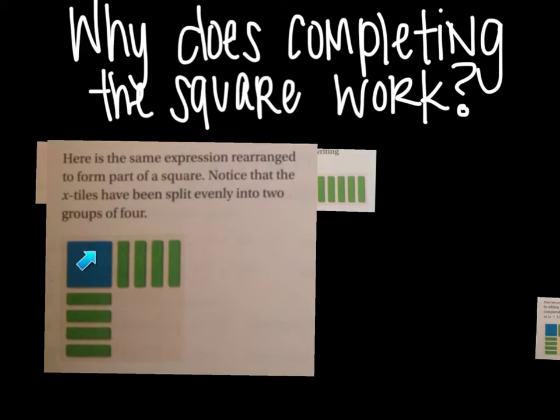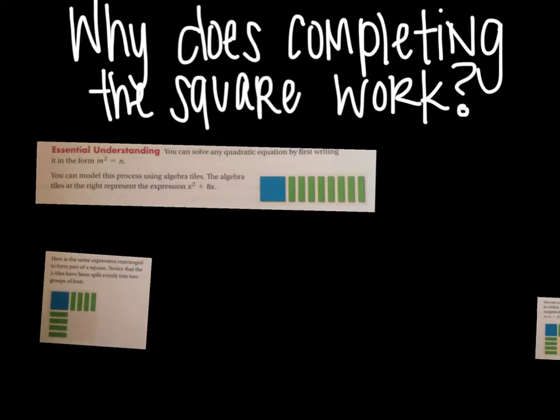The next thing you want to notice is that this is the exact same expression that we have, x squared plus 8x, and then it's just shaped and evenly distributed, so now you have four x's on both sides. And as you can see, it's starting to make a shape of what looks like a square. But we're missing these pieces right in here to make it a complete square, and this is where the name completing the square comes from.